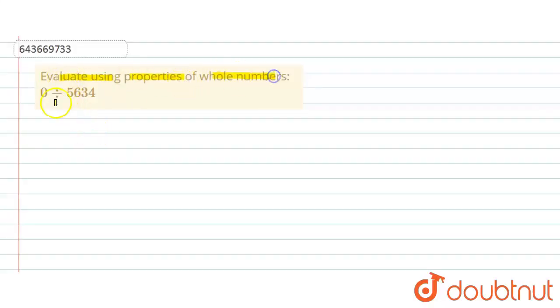evaluate using properties of whole number zero divided by 5634. Okay, so zero here divided by 5634.